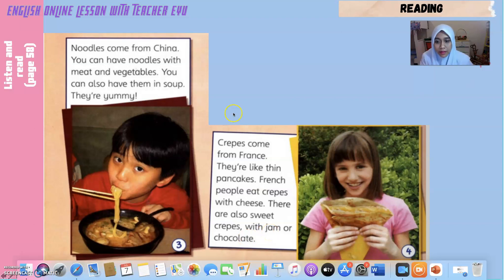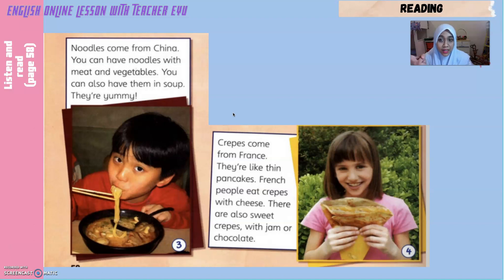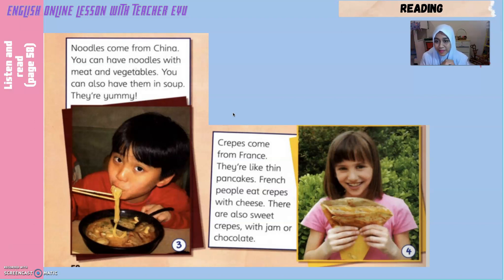I hope you can understand the text very well. So can you name the food that we have learned? The first one is cheeseburger, second is souvlaki, third is noodles, and lastly number four is crepes. Of all these four foods, which one is your favorite?